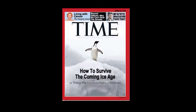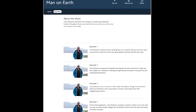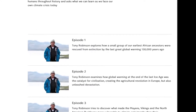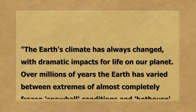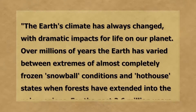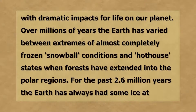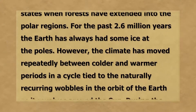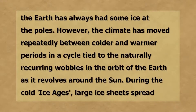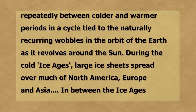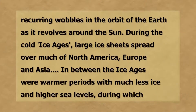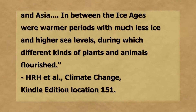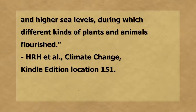And thank goodness, because a return of the glaciers would spell genuine disaster. Nobody really denies that warmer periods are better for life on Earth, including the Prince of Wales, who is also not a scientist. His book says: "The Earth's climate has always changed, with dramatic impacts for life on our planet. Over millions of years, the Earth has varied between extremes of almost completely frozen snowball conditions and hothouse states when forests have extended into the polar regions. For the past 2.6 million years, the Earth has always had some ice at the poles. However, the climate has moved repeatedly between colder and warmer periods, in a cycle tied to the naturally recurring wobbles in the orbit of the Earth as it revolves around the Sun. During the cold Ice Ages, large ice sheets spread over much of North America, Europe, and Asia. In between the Ice Ages were warmer periods, with much less ice and higher sea levels, during which different kinds of plants and animals flourished."